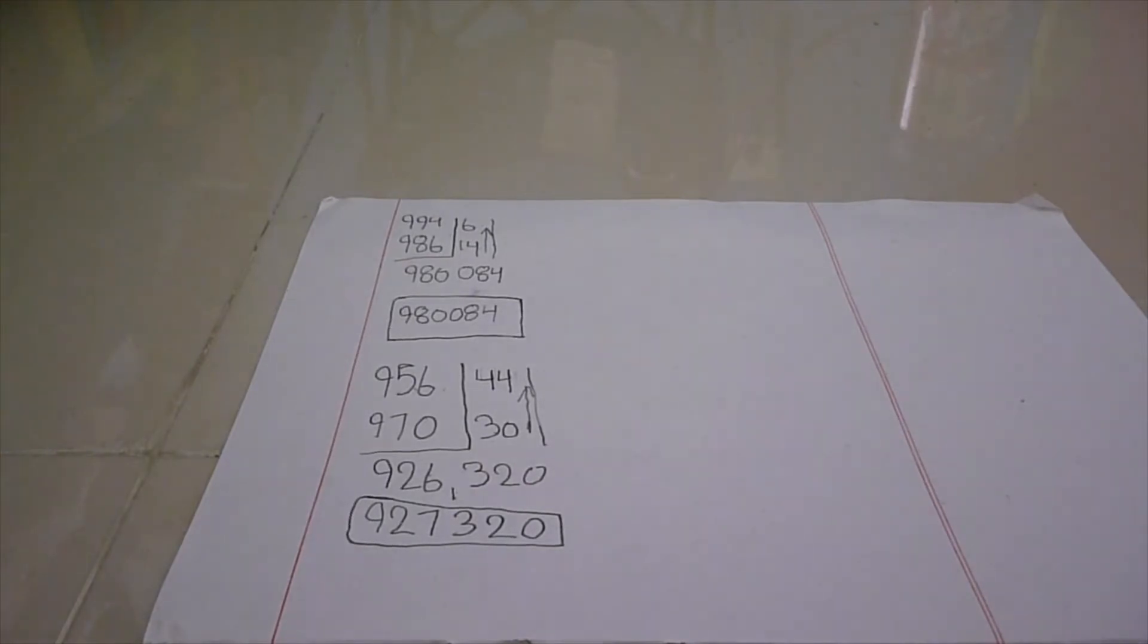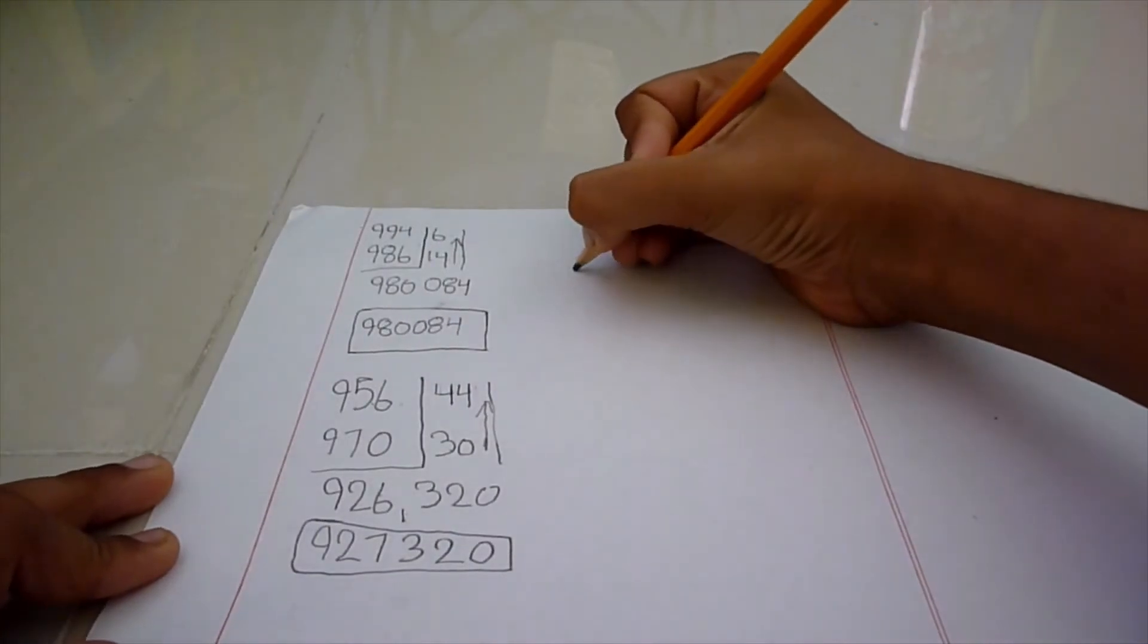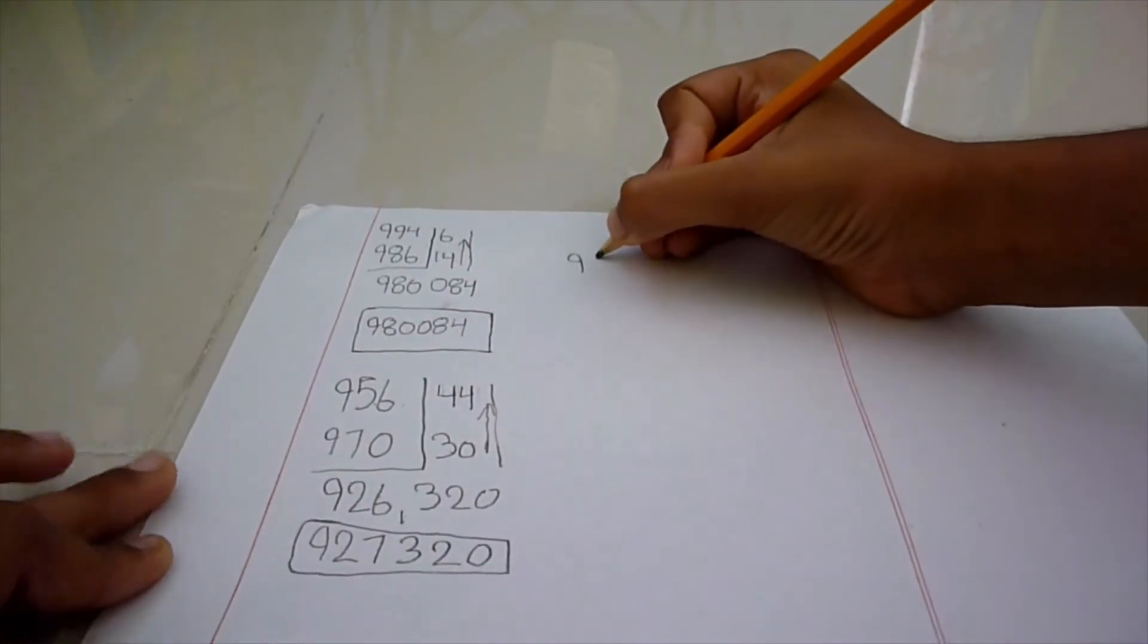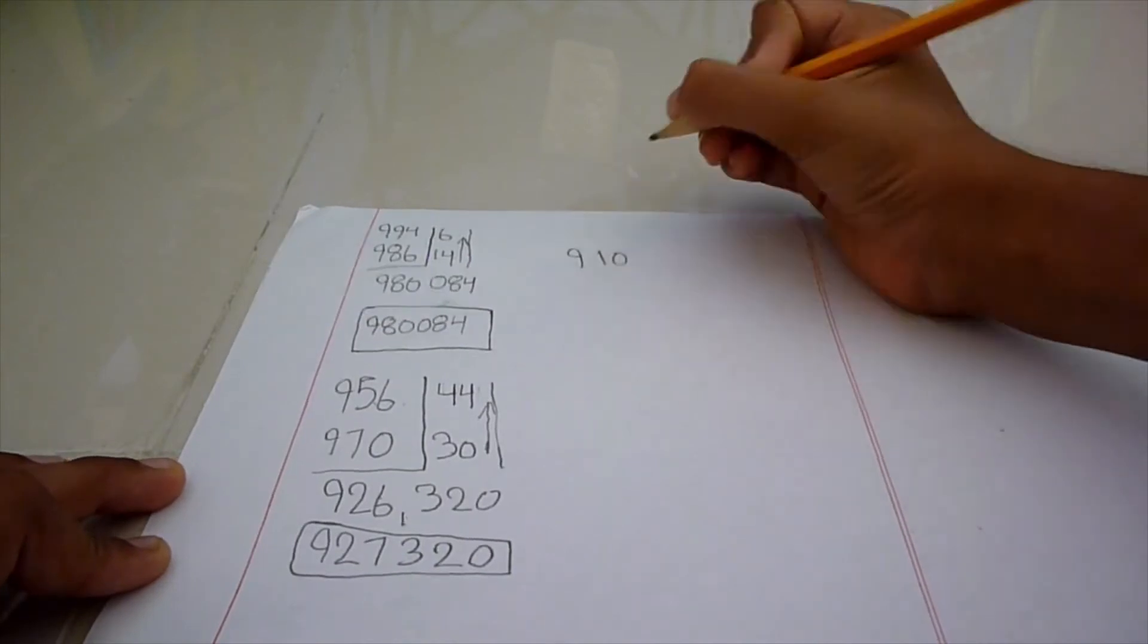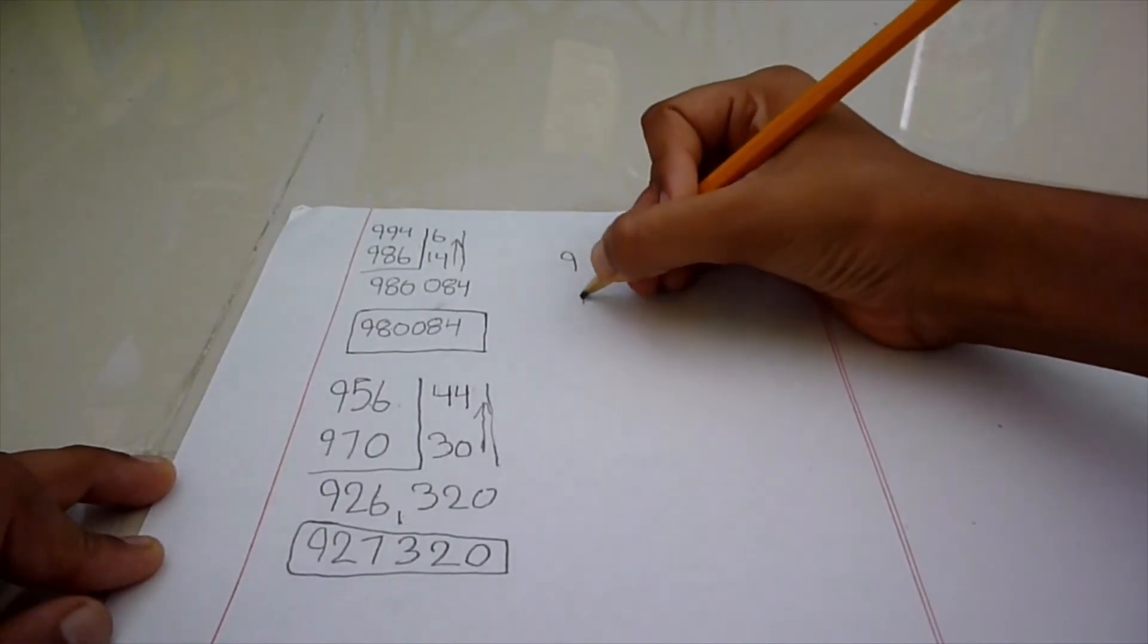Now, let's go on with the third example, which will be 910 multiplied by 960.